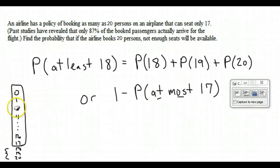So if we added all the probabilities from 0 all the way up to 20, we would get 1. But we're going to subtract off from 0 up to 17, and that's going to leave us with what we're looking for, 18, 19, and 20.